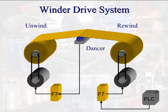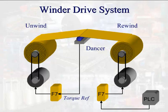The winder with the drives added to the system is now shown. One drive is required for each motor, since one motor will be run in speed control mode and the other in torque control mode. The winder drive is run in speed control mode, with a PLC sending a speed reference to the rewind motor. The unwind drive is run in torque control mode. The dancer sends an analog signal back to the unwind roll to act as the torque reference. As the web tension increases or decreases, the drive makes adjustments to the motor output torque to regulate the tension.